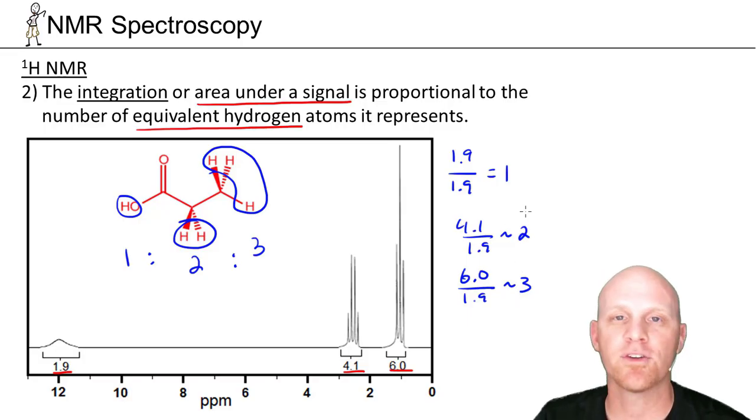Don't round up or round down if it's not right near a whole number. Multiply through by a common factor to get to a whole number ratio. But in this case, it's a 1 to 2 to 3 ratio exactly as they show up in the compound. That's the next piece of information we typically evaluate in ¹H NMR, the integration or area under the signal.